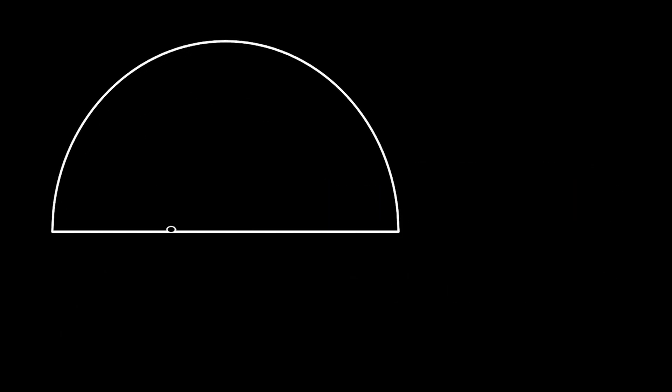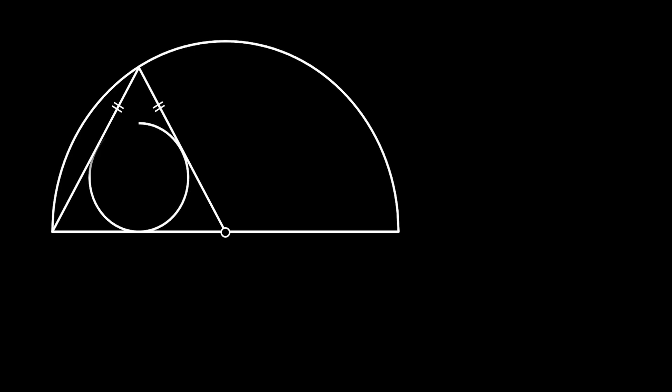We will start our problem with a half circle, then we will mark the center of this half circle and from the left radius we will construct an isosceles triangle which touches the arc of our half circle, as you can see on the sketch. Then, inside our triangle, we will inscribe a circle with the area of 4 squared units.